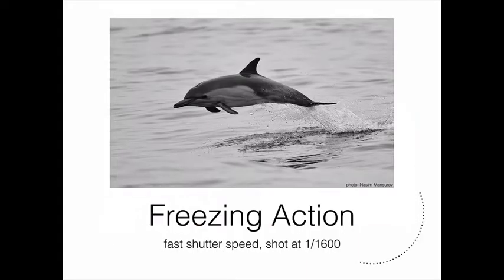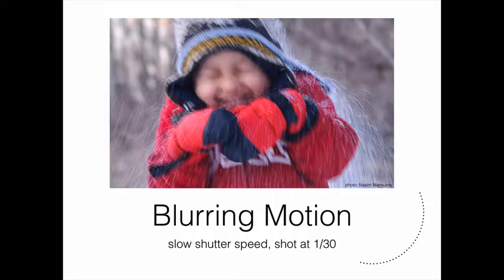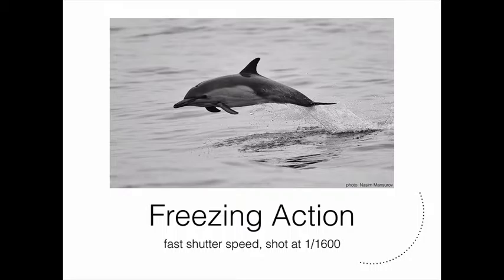This image here freezes action and it's shot with a faster shutter speed — as you can see, it was shot at one sixteen-hundredth of a second. This image here is blurring motion and was shot with a slower shutter speed at a thirtieth of a second. You can see the difference: this one is blurred, and this one is very crisp, catching that dolphin in midair. These are two images photographed at opposite ends of the shutter scale.